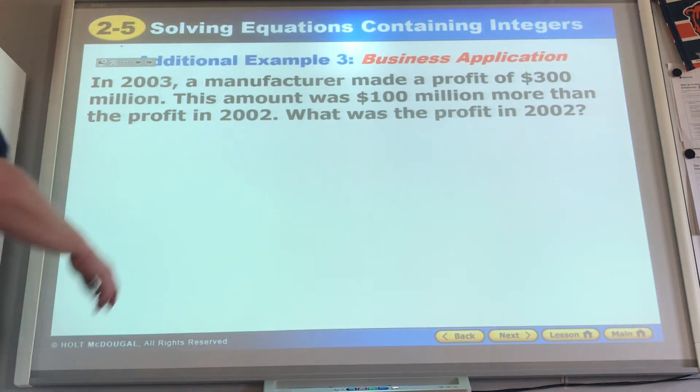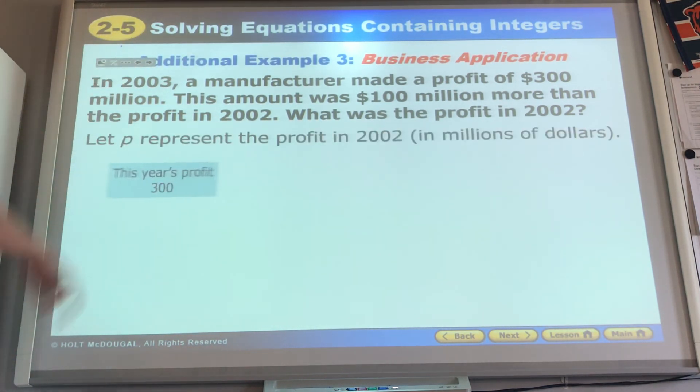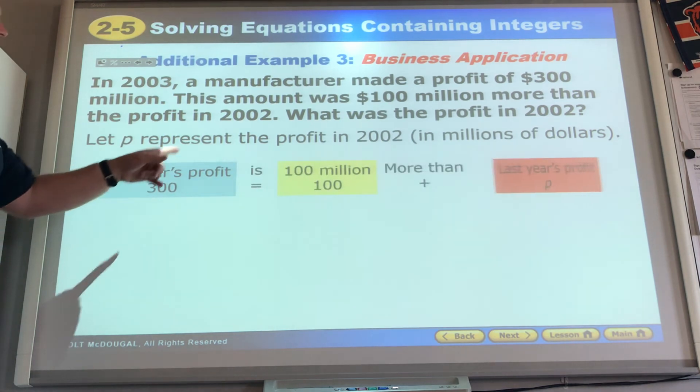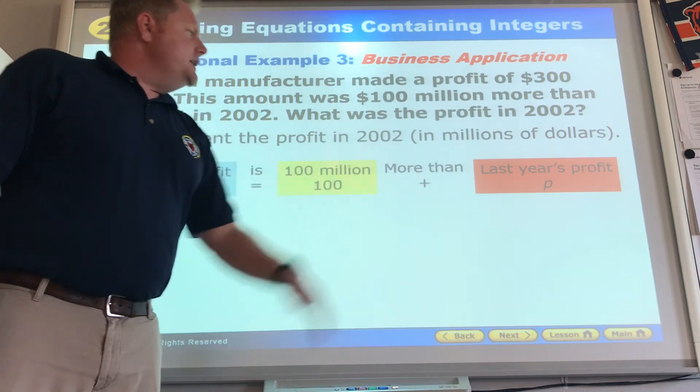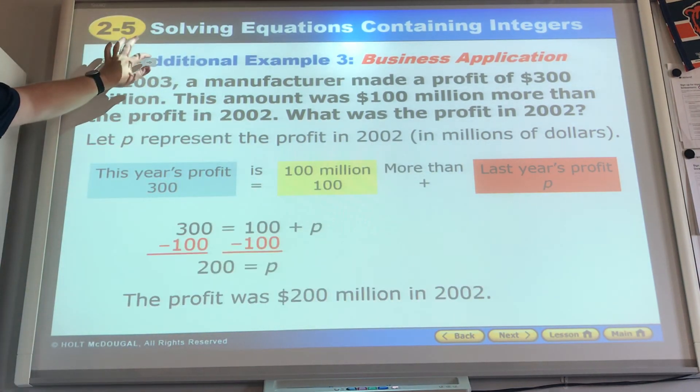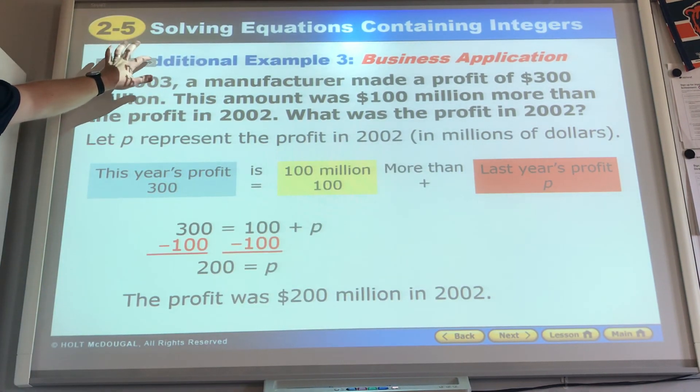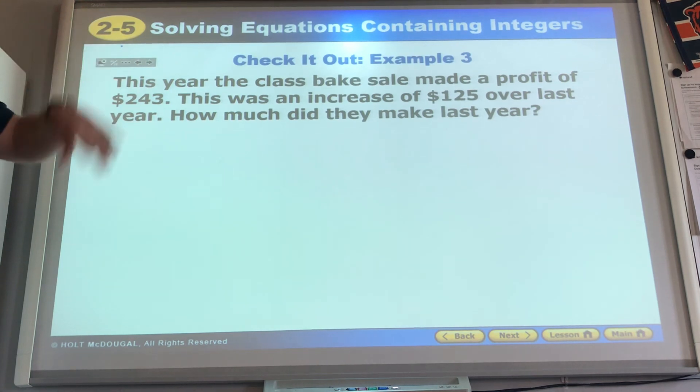Let's look at what they did. And I think this might be our last problem or second to last. P represent this year's profit. There it is. $300 equals $100 million plus P. We do that equation. We subtract. $200 million was the profit. Our second to last one, I guess.